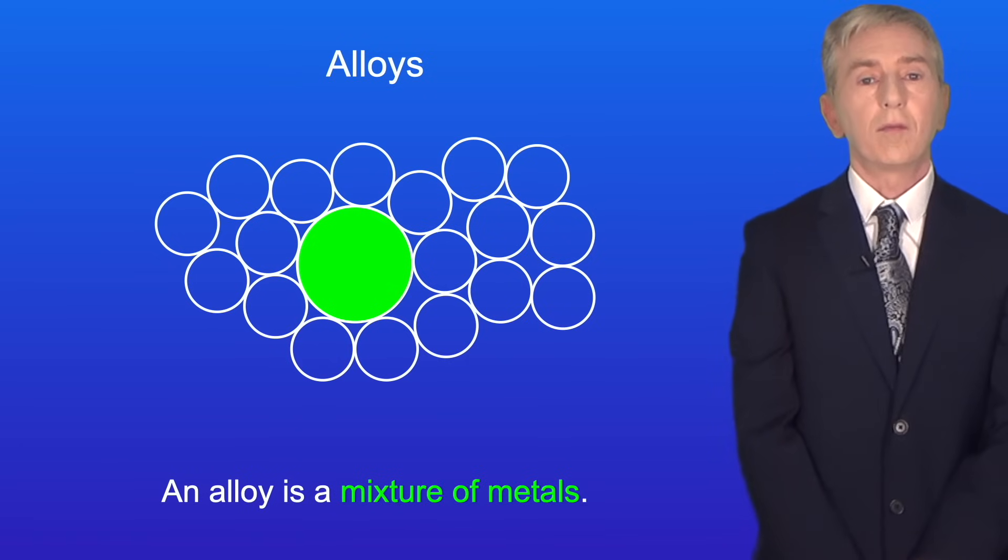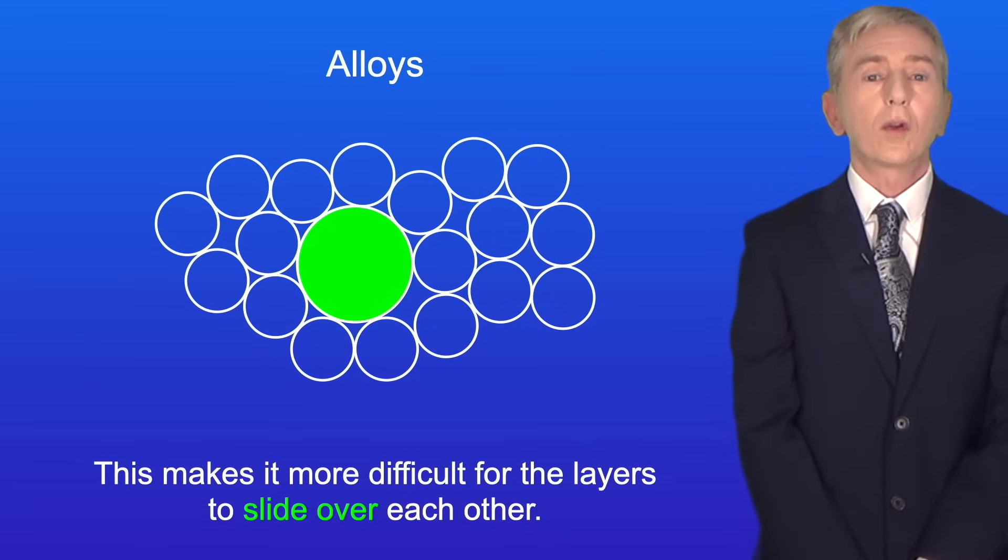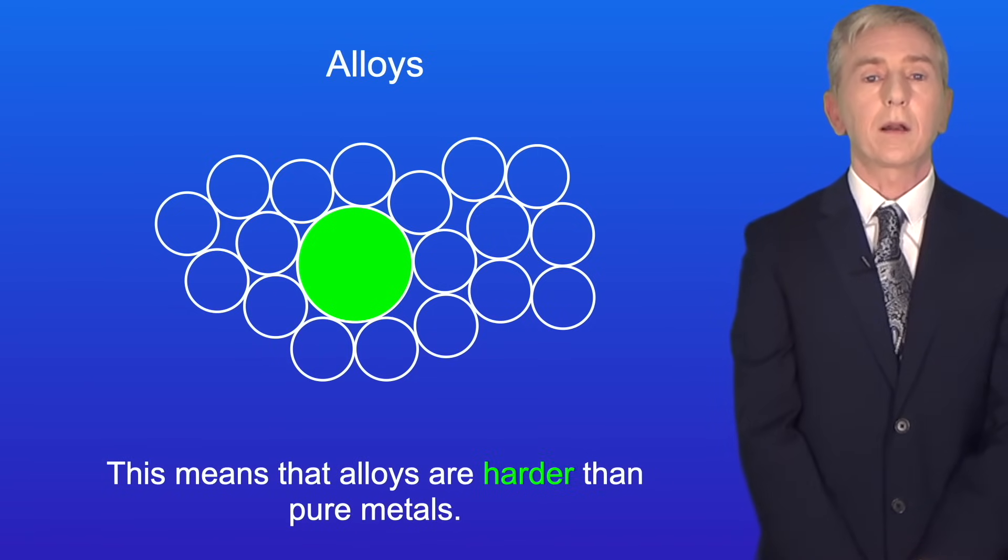An alloy is a mixture of metals. In an alloy the different sizes of atoms distorts the layers. This makes it more difficult for the layers to slide over each other and this means that alloys are harder than pure metals.